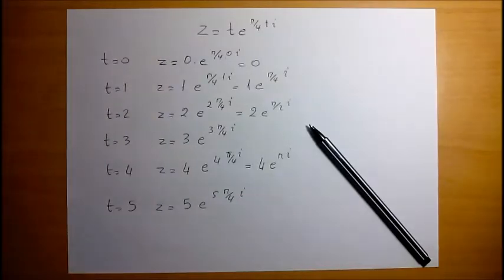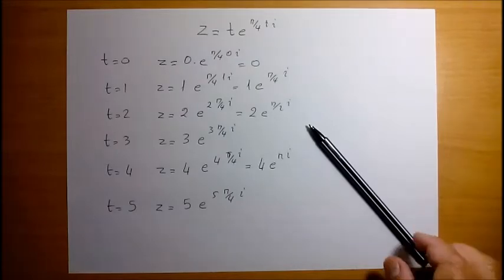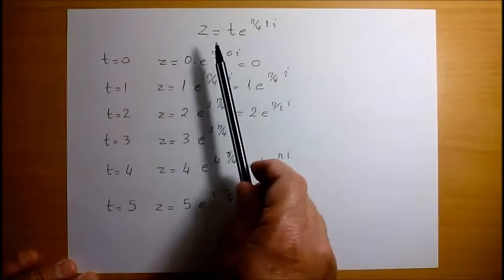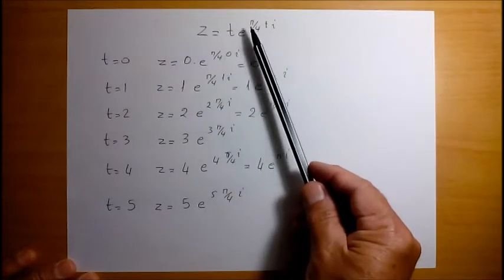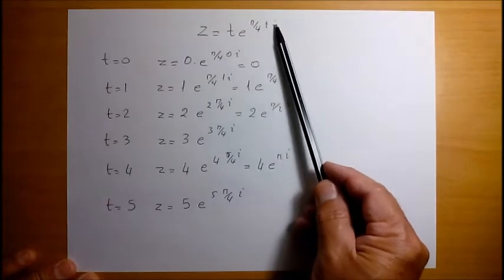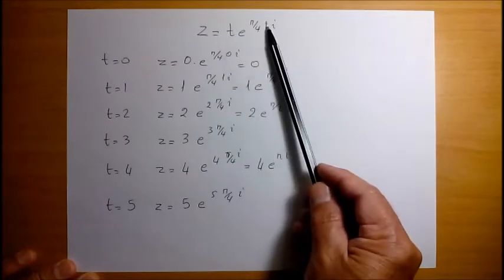Hi guys, today we are going to present a geometrical locus created by different complex numbers. Our general formula for our complex number is z equals t times e to the pi by 4t i, where t is a parameter.